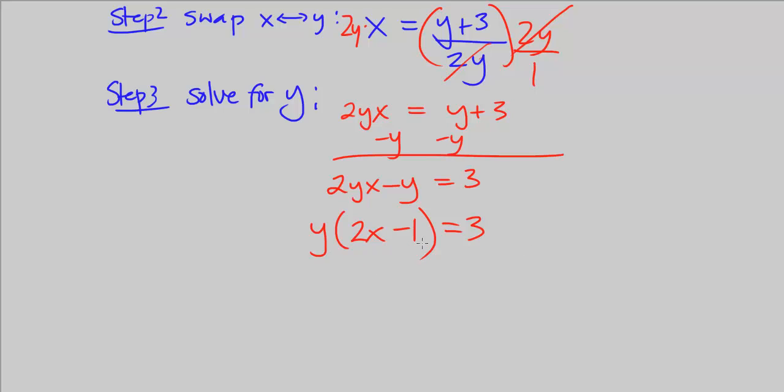And finally, we can divide both sides by 2x minus 1. Right, that's going to cancel these, and we're left with y is equal to 3 over 2x minus 1.